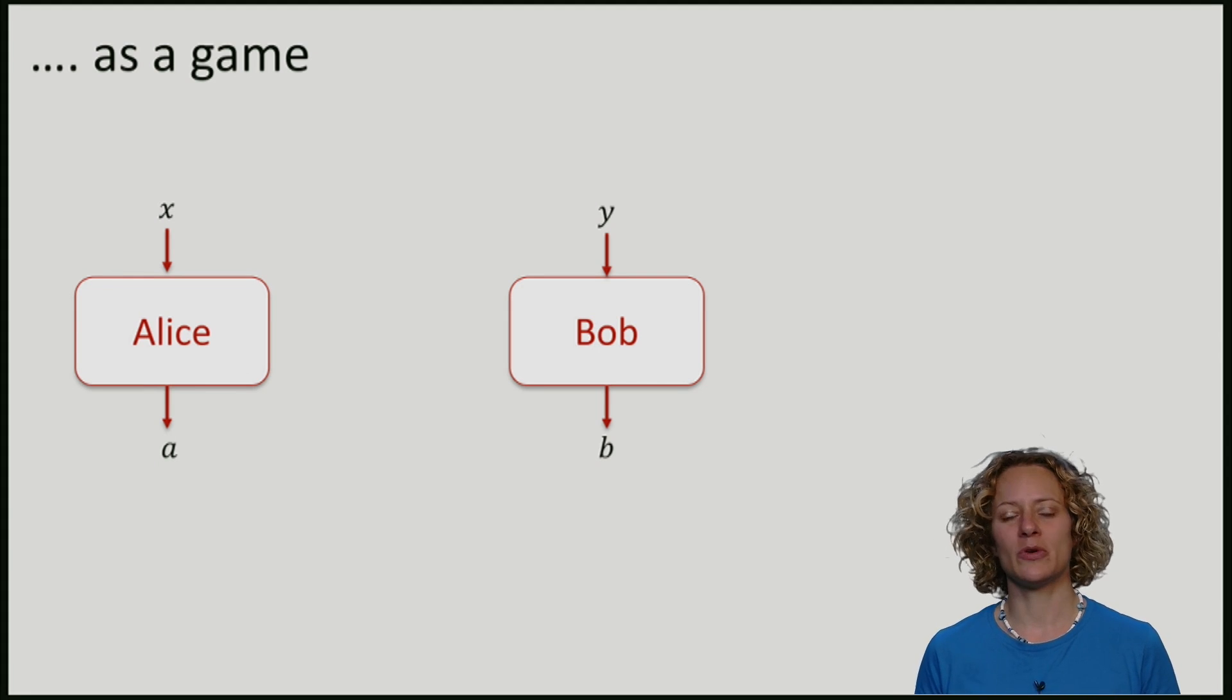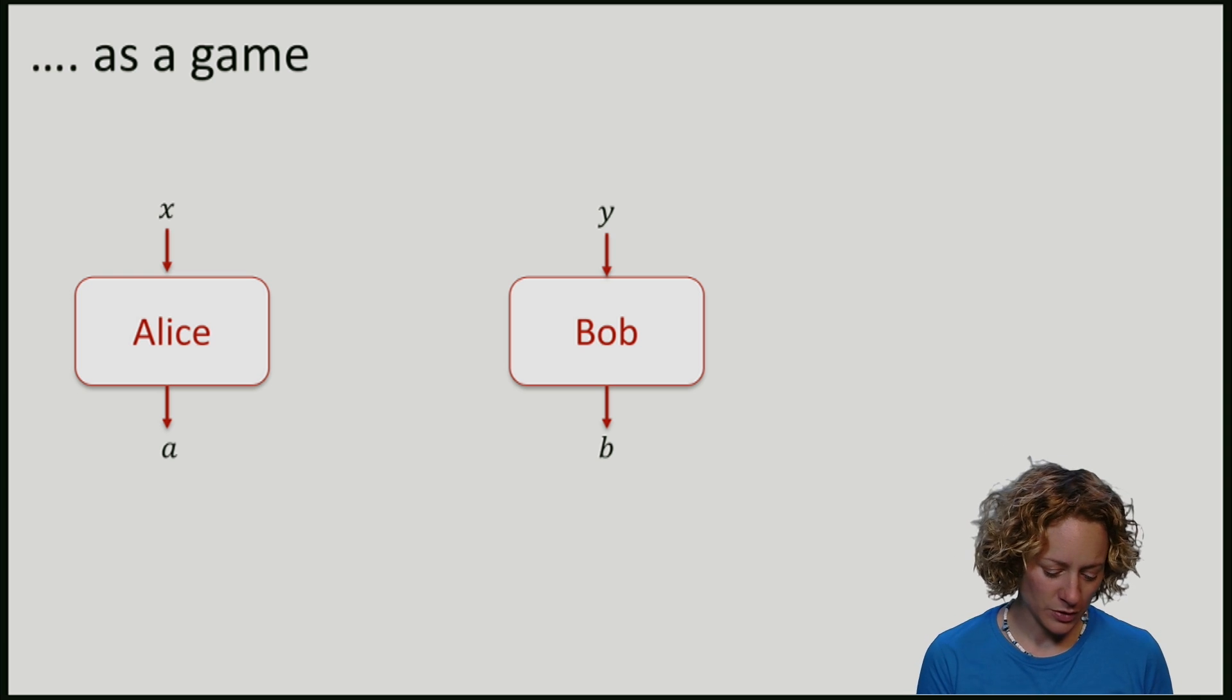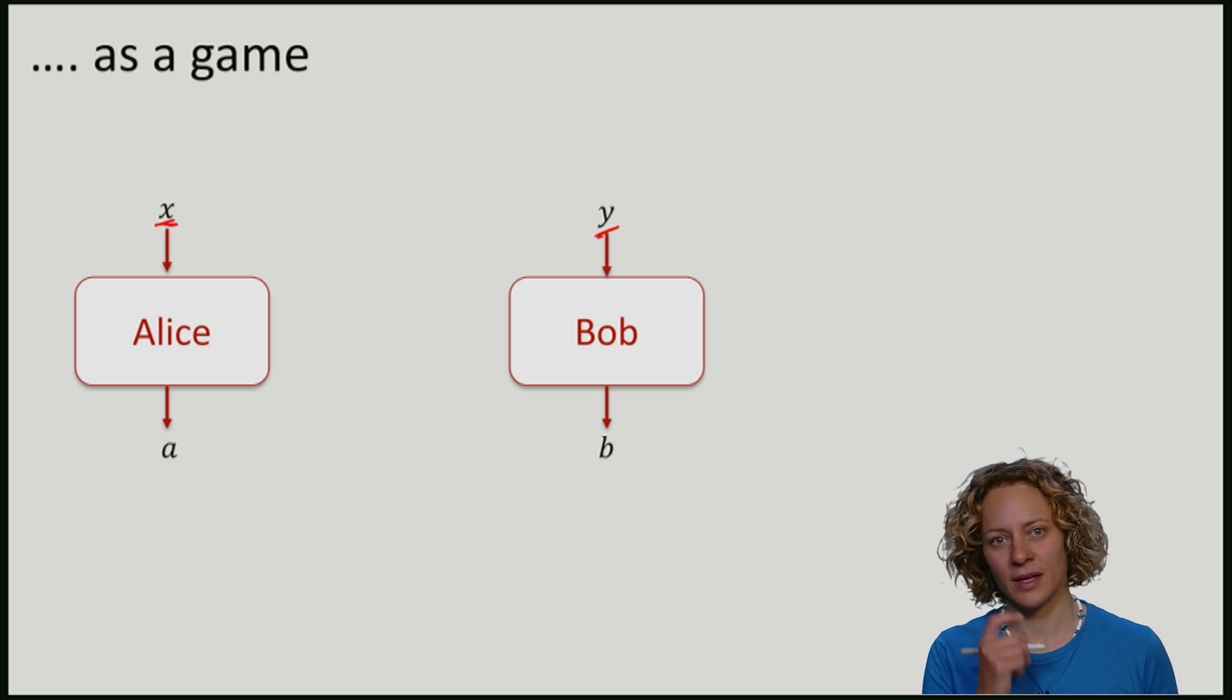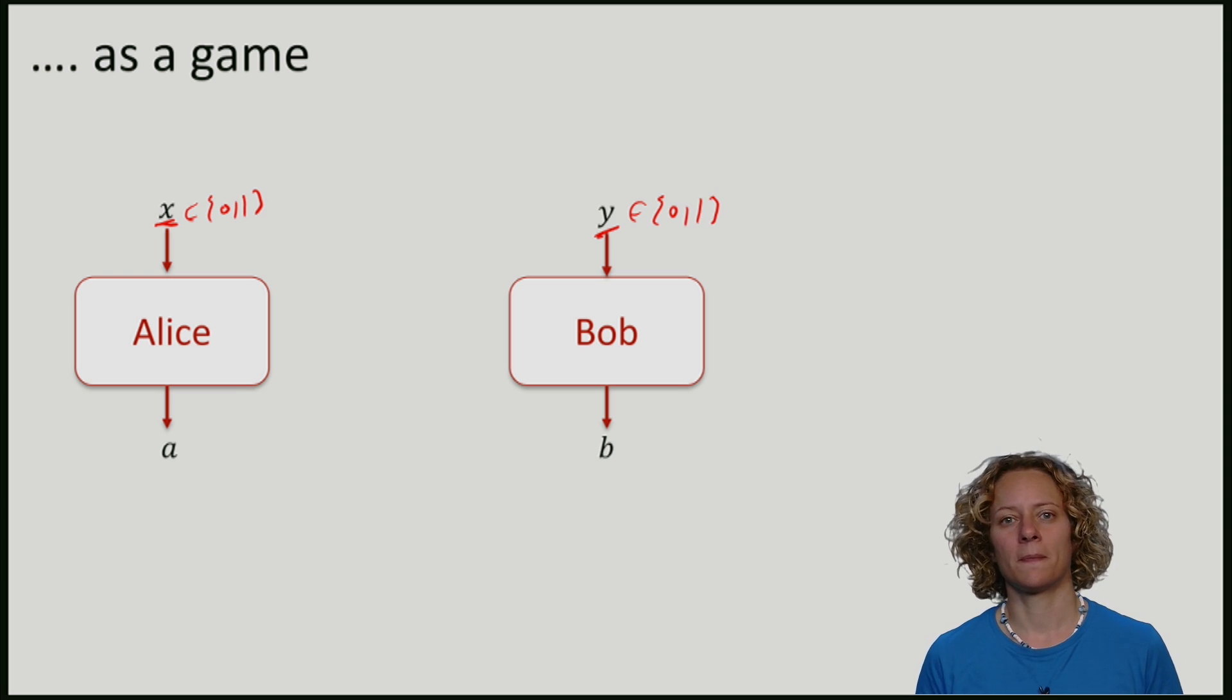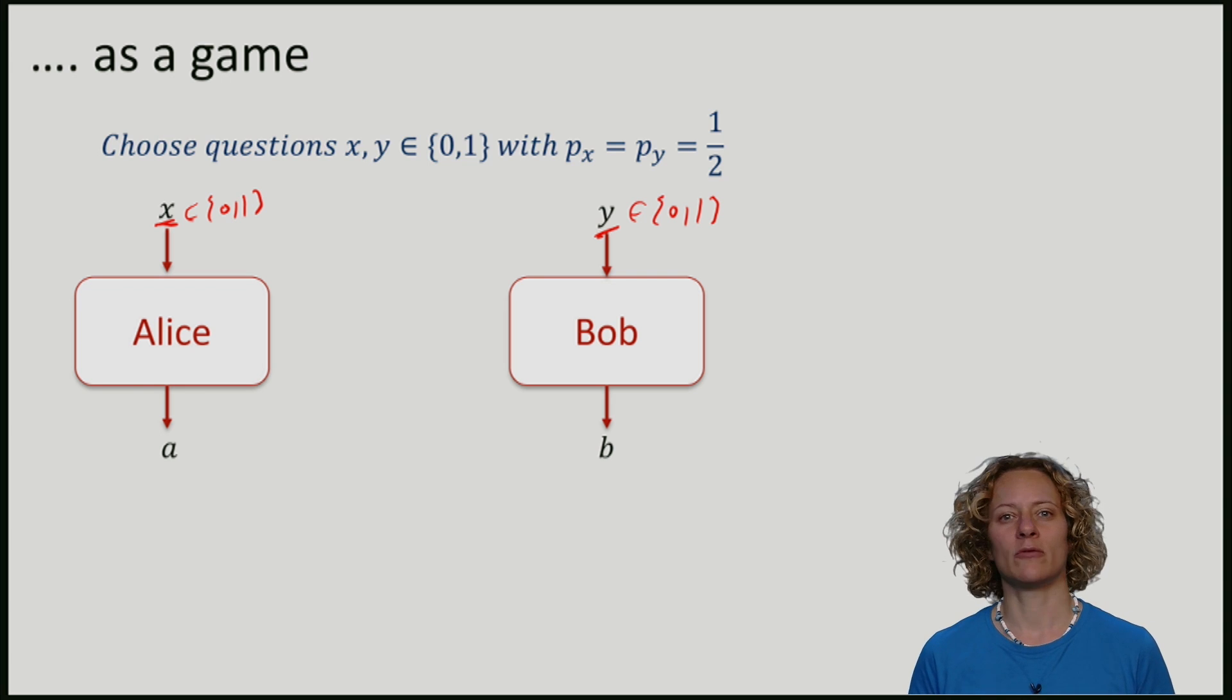In this game we will ask Alice and Bob questions, and we will call these questions x and y. Here in this lecture x and y are just going to be single bits. We will choose these questions with some probability. We will play this game many times and in every round we choose x and y with probability half each.